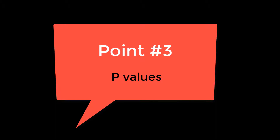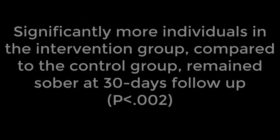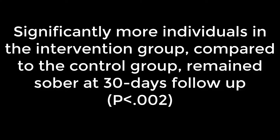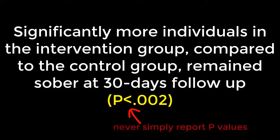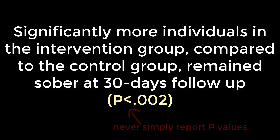The third point is p-values. Let's say your research study hypothesis was that significantly more participants in an intervention group receiving smoking cessation will remain sober after 30 days, as compared to the control group. You set your alpha value to .05. Simply stating that there is significance with a p-value of less than .002 doesn't give us the entire story. Never simply present p-values. When possible, present point estimates with confidence intervals.